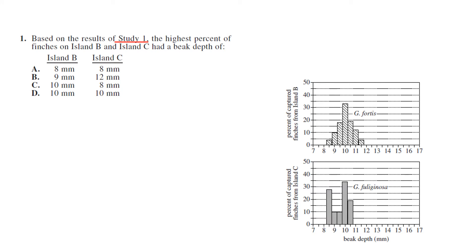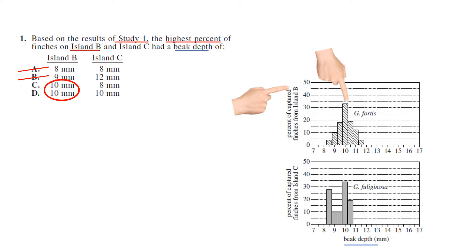Question one: based on the results of Study One, the highest percent of finches on Island B had a beak depth — so we're looking for beak depth. On Island B, the tallest column corresponds to a beak depth of 10, so we can eliminate A and B. Then on Island C, the tallest column is also a beak depth of 10, so your answer is D.